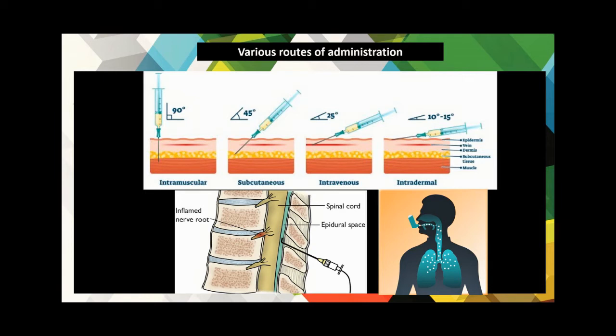In intravenous administration, the drug is injected when an immediate effect is required, when it cannot be injected into other tissues, or when absorption is inhibited by poor circulation. It is of great value in emergencies as the drug reaches directly into the bloodstream. In intradermal injection, drugs are injected into the outer layer of the skin in a very small amount and absorbed slowly. In epidural administration, the drug is injected into the vertebral space between the dura of the spinal cord and its lining, used in cases of sudden cardiac arrest.